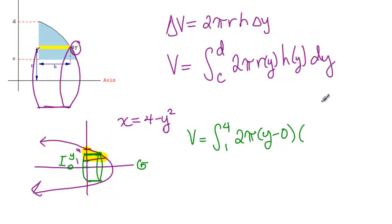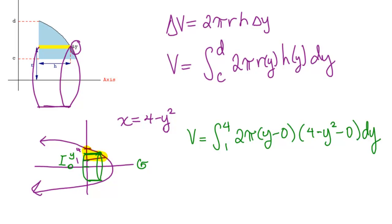And then the height of this slice is my rightmost function, 4 minus y squared minus my leftmost function, which is 0, dy. So that's how you do shells in terms of y.